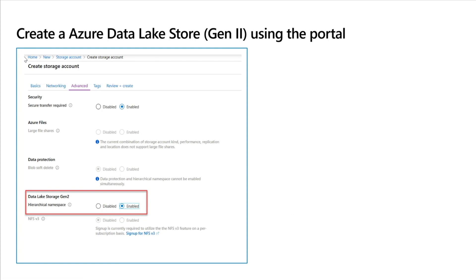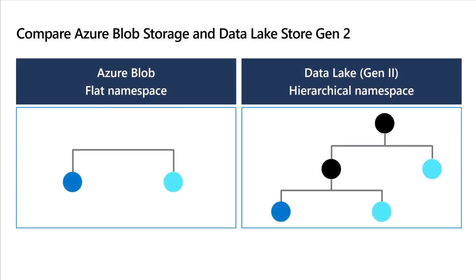What does Hierarchical Namespace mean? It means a folder structure exists — similar to the folder structure on your laptop, with folders inside folders. Azure Blob Storage uses a flat namespace and does not provide this. The ability to create folders, keep data inside various folders, and run queries against data available only in one specific folder is really useful in real-time scenarios. Data Lake provides this hierarchical namespace, while Blob Storage has a flat namespace.